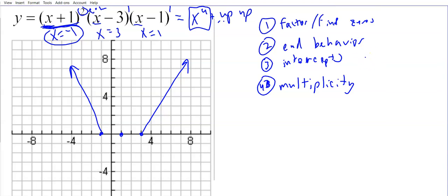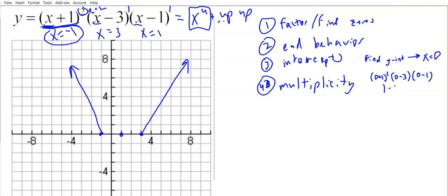To find the y-intercept, set x equal to zero. So we get (0+1) squared times (0 minus 3) times (0 minus 1) — that's 1 times negative 3 times negative 1, which is positive 3. So the graph crosses the y-axis at 3, which is super helpful.